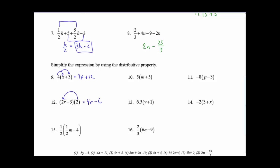And the last one, 1 half times 1 half, that is, don't say 1, that's 1 fourth M, and then half of negative 4 gives you negative 2.